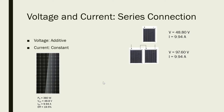As we have said, the voltage is additive. So the voltage across the two solar panels connected in series would be 48.8 volts times 2, which gives us 97.60 volts. And as we have said, the current is constant, so the short-circuit current for these series connected solar panels would still be 9.94 amperes.